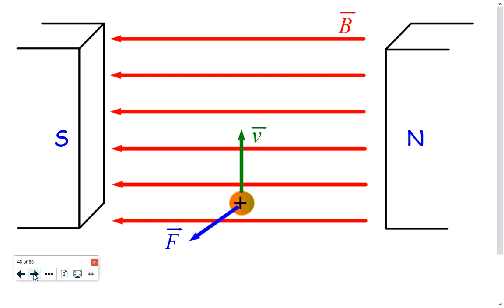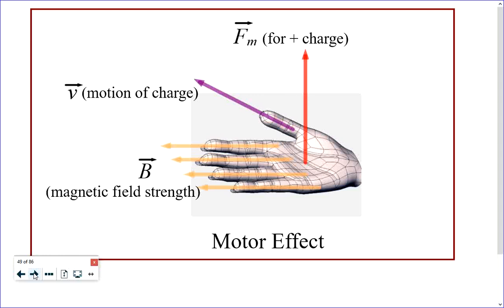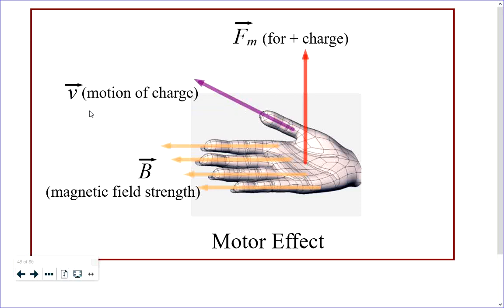We're going to look today at a formula we can use to calculate the amount of magnetic force. Your thumb is the direction the charge is moving, your fingers point in the direction of the magnetic field, and the magnetic force is out of the palm of your hand if it's a positive particle. For a negative particle, the force would be out of the back of your hand.